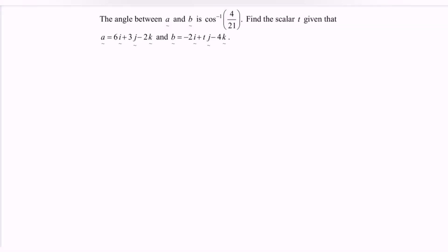Hello everyone. In this video, I'm going to discuss an example for vectors. The question states: the angle between vector A and B is arccos(4/21). Find the scalar T, given that vector A = 6i + 3j − 2k and vector B = −2i + tj − 4k.